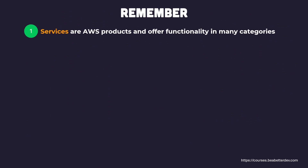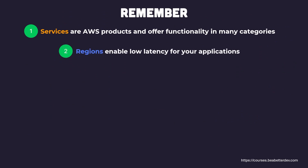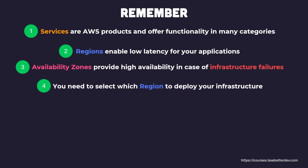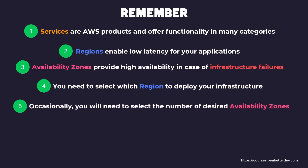Just to summarize some key points from this lesson. First, remember that services are AWS products and they offer functionality in a variety of different categories. Second, remember that regions enable low latency for your applications — the closer your infrastructure is to your end customers, the faster your applications will be. Third, availability zones are used to provide high availability in the case of infrastructure failures. Fourth, you'll need to select which region to deploy your infrastructure to, either through the AWS console or programmatically. And fifth, occasionally you'll need to select the number of desired availability zones for your infrastructure, though many AWS services handle this for you. I hope this lesson was useful in giving you a background on key AWS concepts. I'll see you in the next one.